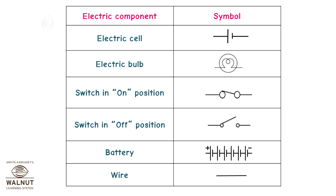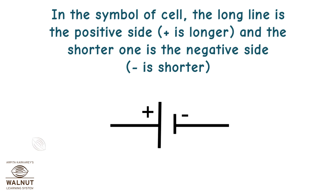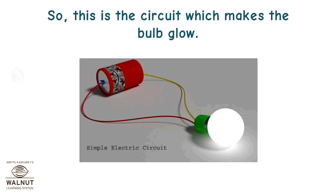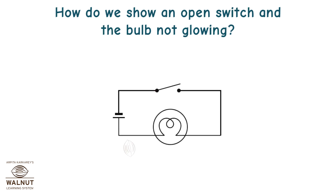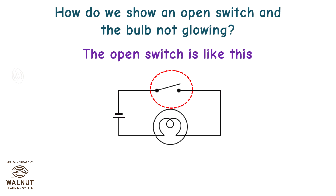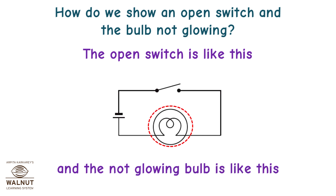Let's take a look at the circuit symbols for the components that we already know: electric cell, electric bulb, and switch in the on position. In the symbol of a cell, the long line is the positive side — plus is longer — and the shorter one is the negative side — minus is shorter. This is the circuit which makes the bulb glow. The open switch is like this, and the not-glowing bulb is like this.